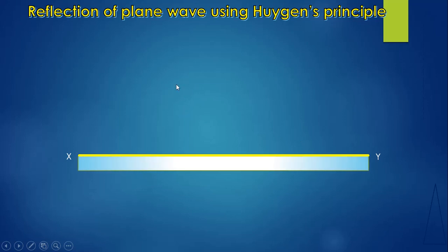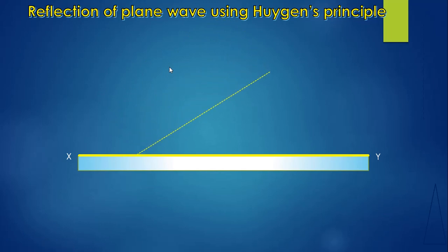Assume that a plane wave is now falling on the XY reflecting surface. Because of this angle, this plane wave is moving towards the reflecting surface with a certain angle — it is not parallel to XY. Because of this angle, one end has already touched the XY reflecting surface whereas its other end is away from the reflecting surface.